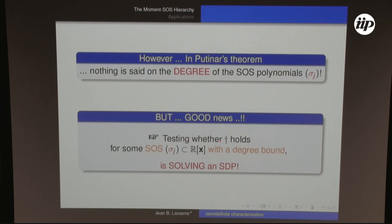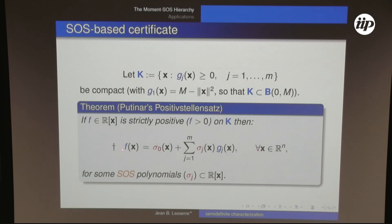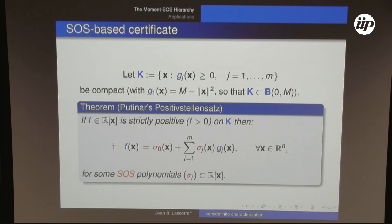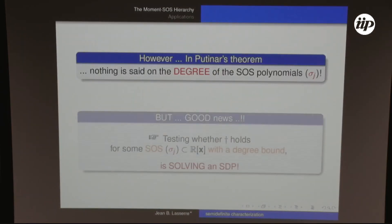The good news: testing whether this identity holds for sum-of-squares weights with a fixed degree bound is just solving an SDP. If you fix the degree of σ_0 and σ_j to be at most, say, 10, and check whether such weights exist, it's just solving a semidefinite program.